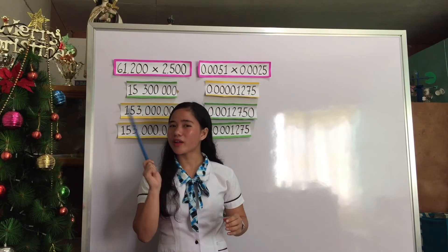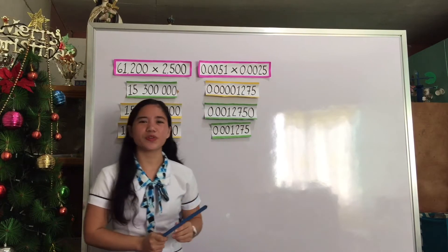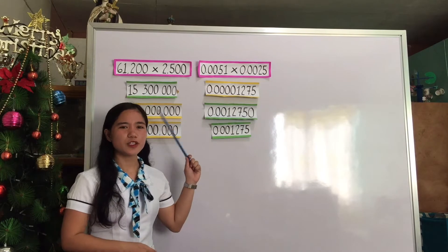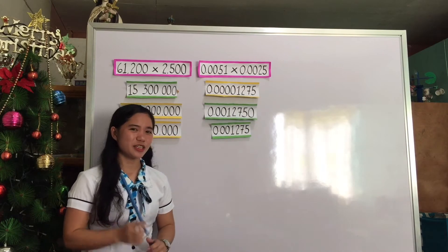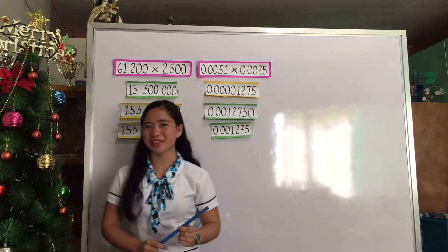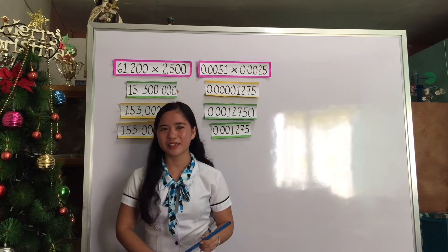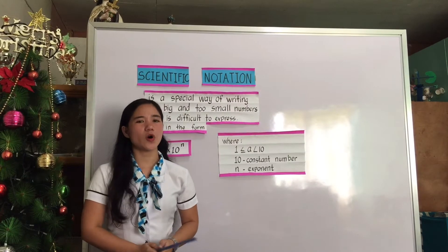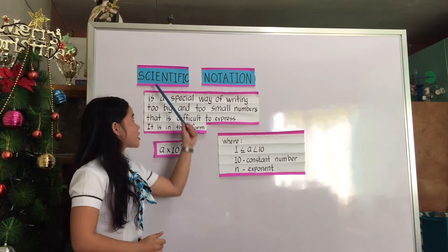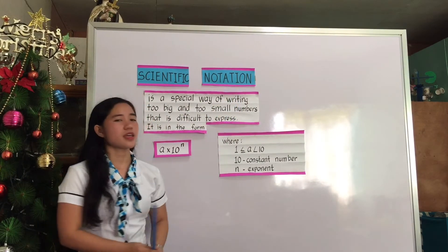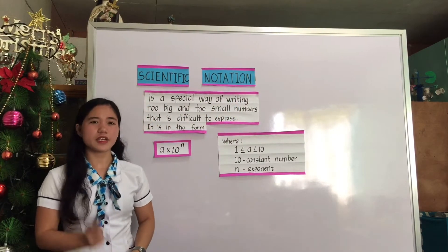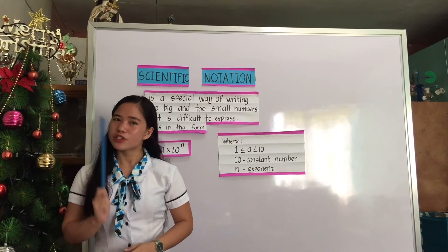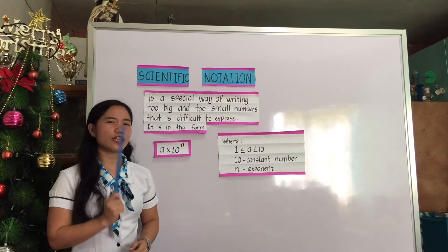Did you know that we can shorten these large and small numbers? Do you want to know the technique? The technique is called scientific notation. It is a special way of writing very big and very small numbers that are difficult to express.